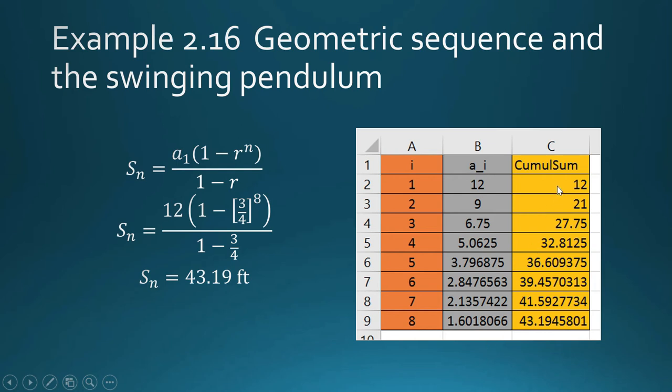How about the cumulative sum? The sum of the first n terms. So, of course, the first sum is going to be 12. The sum of the first two terms is 12 plus 9, so that's 21. The sum of the first three terms is going to be 21 plus 6.75, and that is 27.75. You know what? I don't know if you know how to use Excel, but we shall make a detour from pre-cal and geometric sequence. Let us go to Excel.